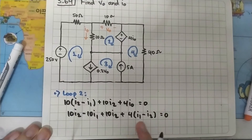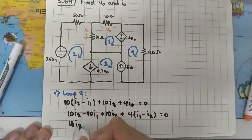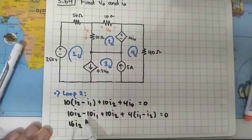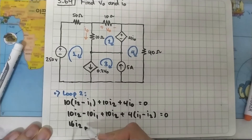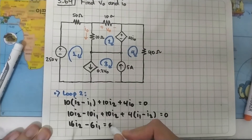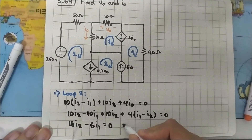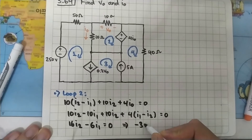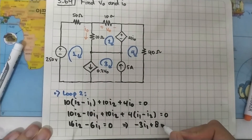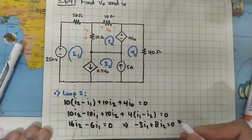Simplifying: 10 + 10 minus 4 gives 16, so we have 16·I2. For the I1 terms: minus 10·I1 plus 4·I1 equals minus 6·I1, giving minus 6·I1 plus 16·I2 equals zero. Dividing both sides by 2: minus 3·I1 plus 8·I2 equals zero. Save this as equation number 1.